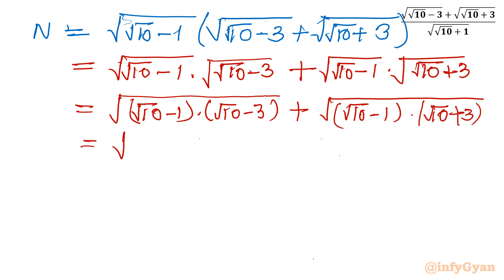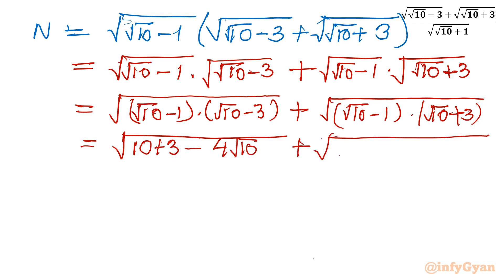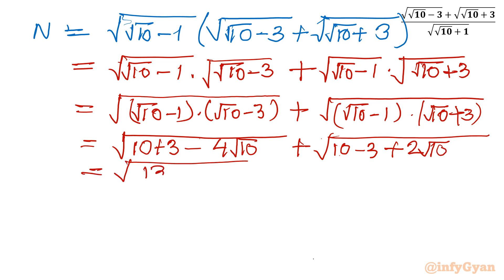Taking the first product: √10 times √10 gives 10, then minus 1 times minus 3 gives plus 3, and the cross terms give minus 3√10 minus √10, so minus 4√10. Result: 13 minus 4√10. For the second product: √10 times √10 gives 10, then minus 1 times plus 3 gives minus 3, and cross terms give 3√10 minus √10, giving plus 2√10. Result: 7 plus 2√10.